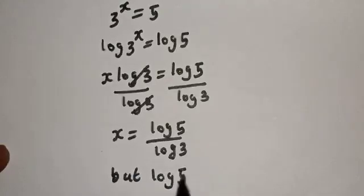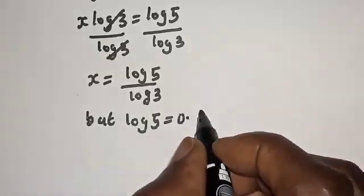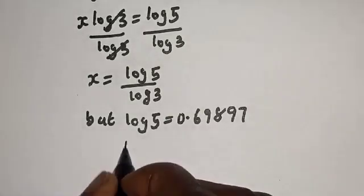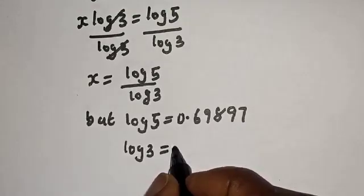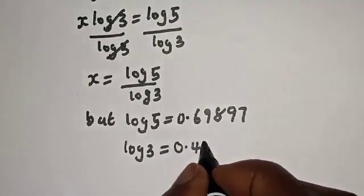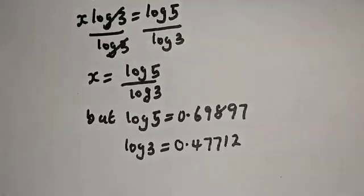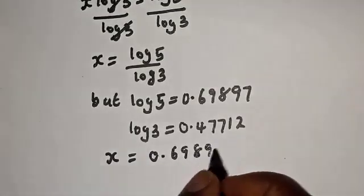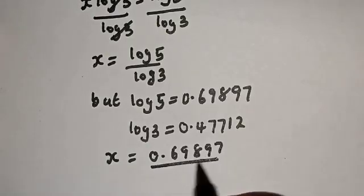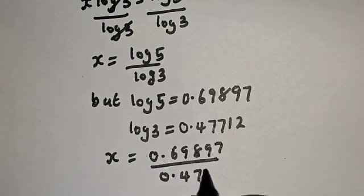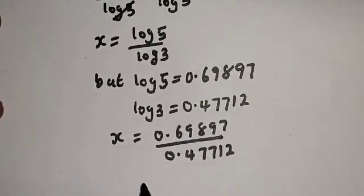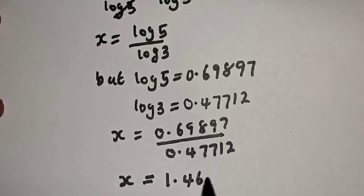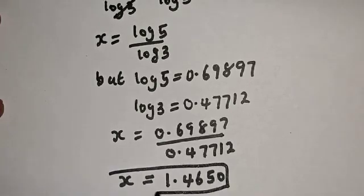Log 5 equals 0.69897 and log 3 equals 0.47712. So s equals 0.69897 divided by 0.47712. Dividing gives s equals 1.4650, and this is the final answer.